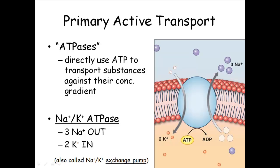Active transport — the first type we're going to talk about is primary active transport. The most common example, something that every cell in your body has, is something called a sodium-potassium pump, sometimes called a sodium-potassium exchange pump or sodium-potassium ATPase. An ATPase is an enzyme that breaks down ATP. Active transport mechanisms use ATP — some kind of energy — because they are usually transporting things uphill against their concentration gradient. Passive mechanisms work from most concentrated to least concentrated; active mechanisms can go the other way, from areas of low to areas of high, but you have to use energy to do that.